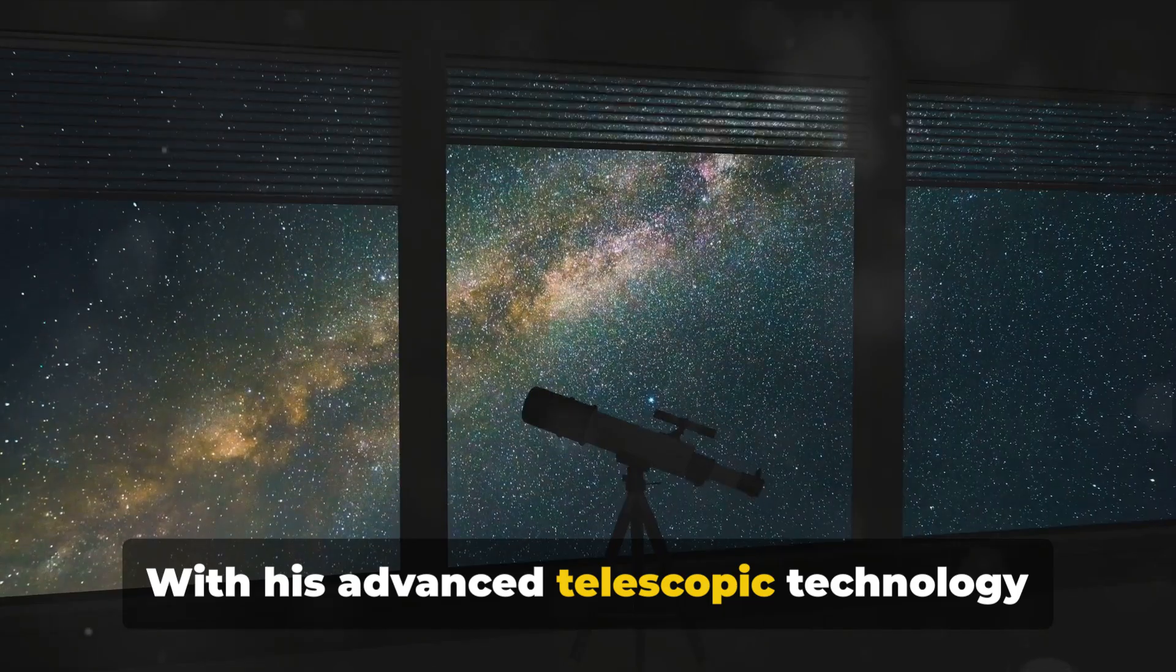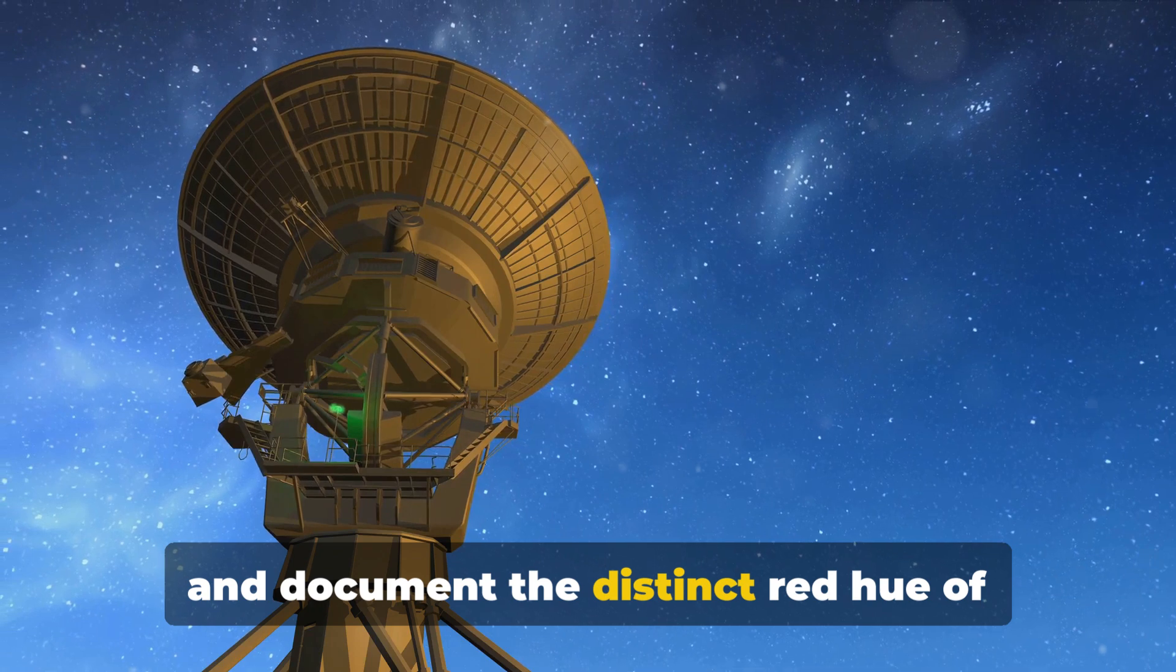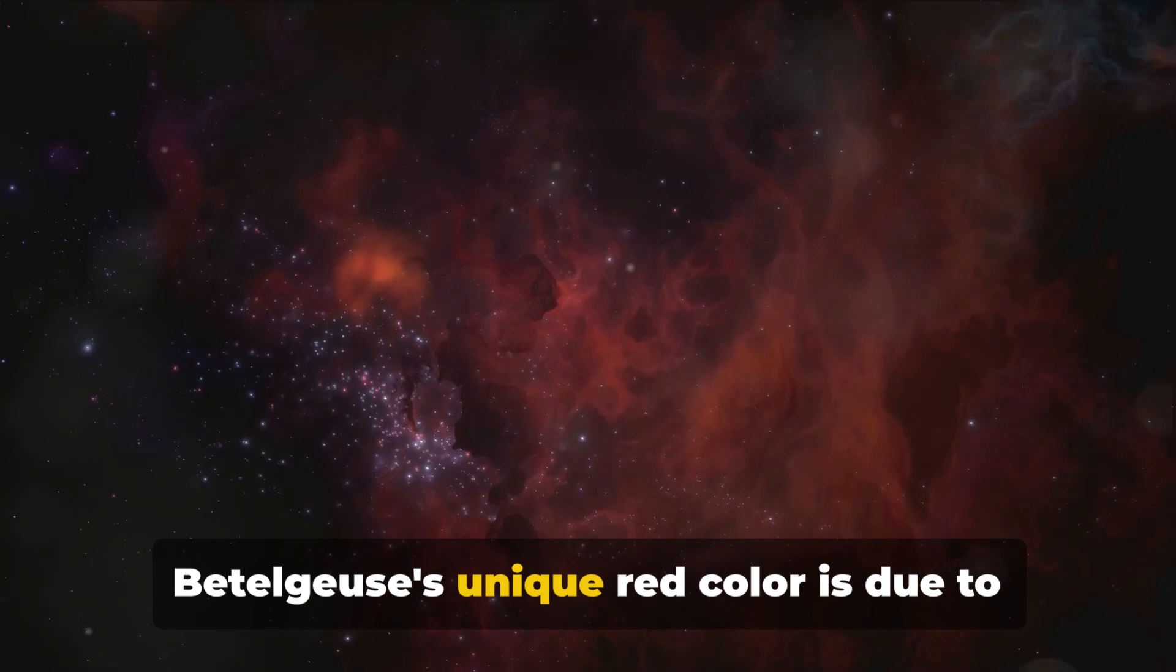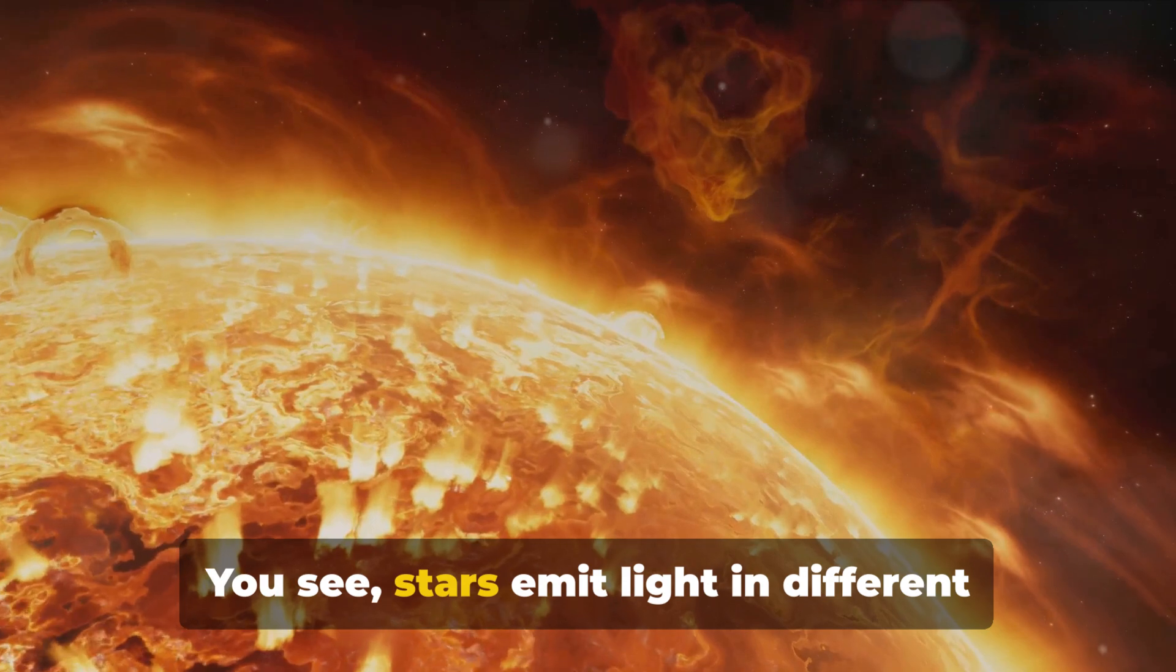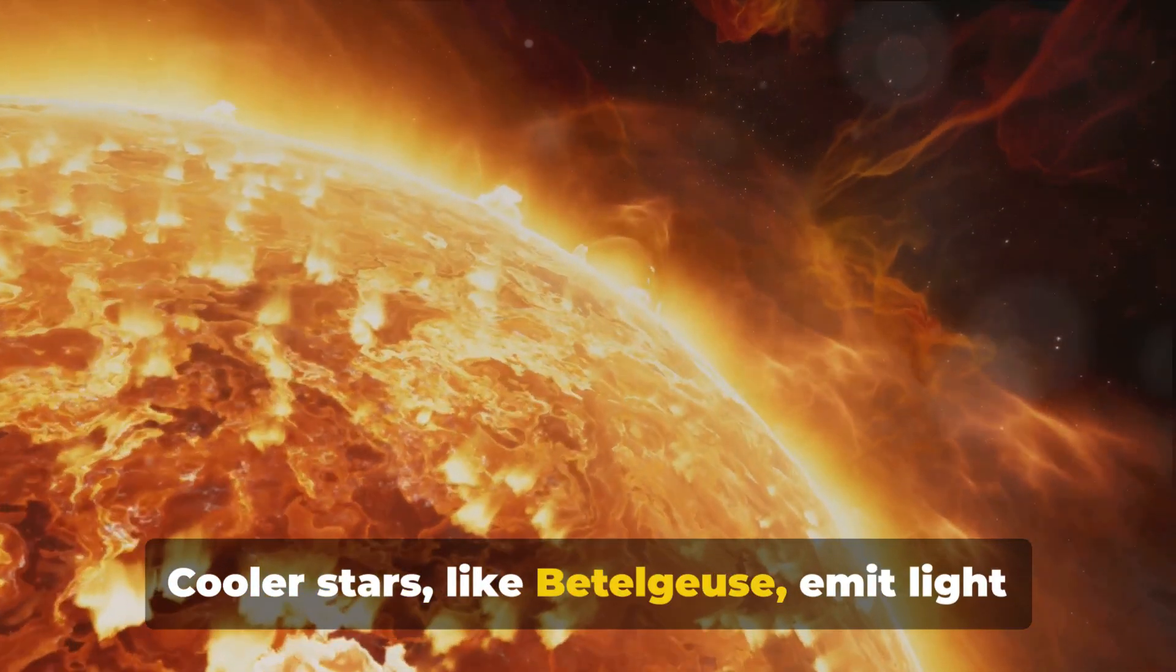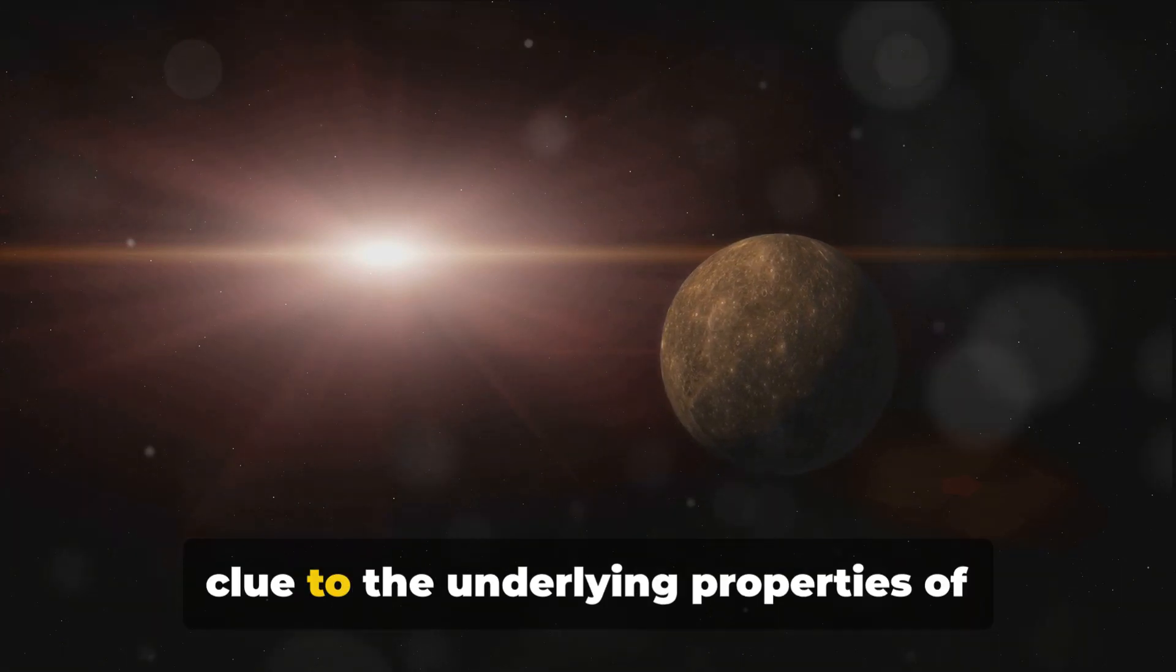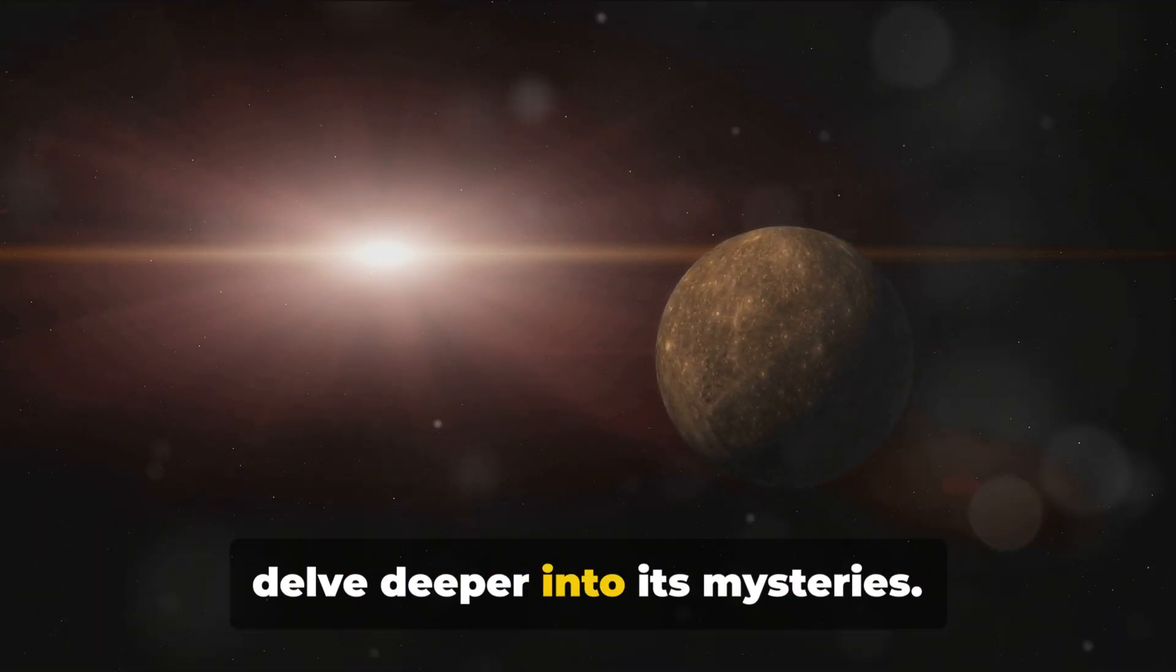With his advanced telescopic technology for that era, Herschel was able to observe and document the distinct red hue of Betelgeuse, a characteristic that was markedly different from other stars in the night sky. Betelgeuse's unique red color is due to its classification as a red supergiant star. You see, stars emit light in different colors depending on their surface temperature. Cooler stars like Betelgeuse emit light at the red end of the spectrum, hence their red appearance. This color difference was a tantalizing clue to the underlying properties of Betelgeuse, and it spurred astronomers to delve deeper into its mysteries.